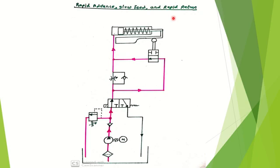Here we have considered a single acting cylinder, as specified in the question paper. If the question asks for a double acting cylinder, you can use that instead. Since a single acting cylinder is returned by spring force, we select a direction control valve that is a three-port valve — with a pump port, a tank port, and an actuator port. The B port is absent. So basically it is a 3/2 direction control valve — a three-port, two-position direction control valve.